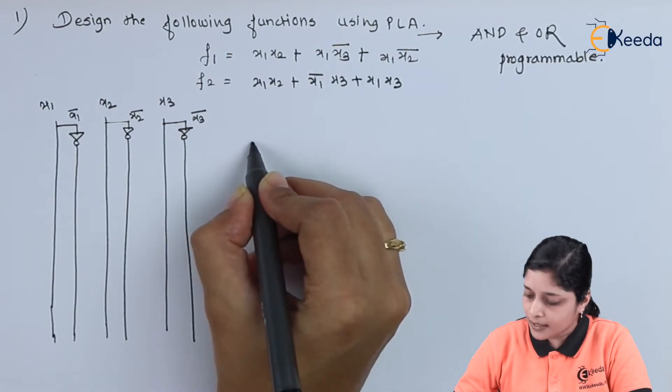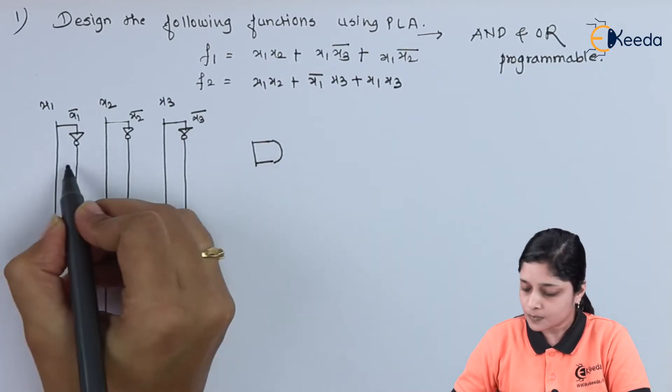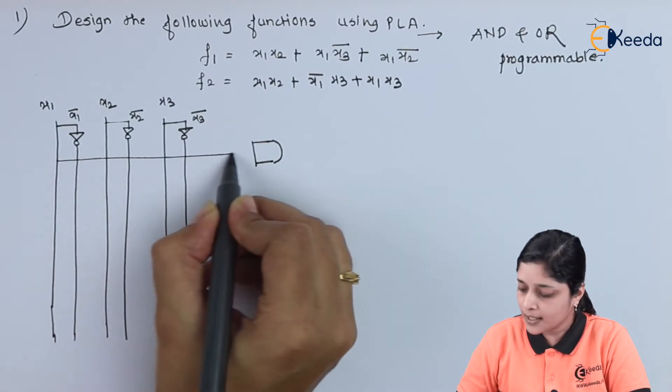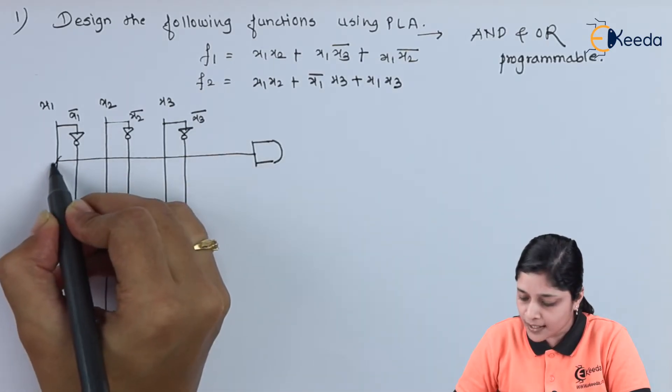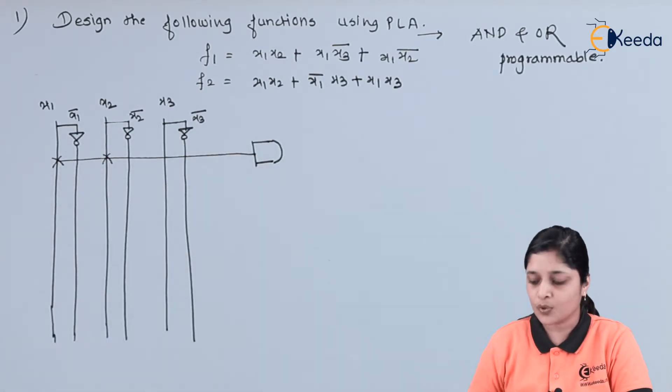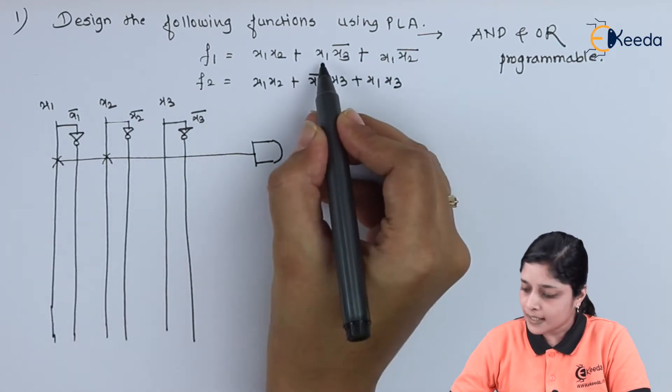We will draw AND gates here. The first term is x1 x2, so we will draw one line and we have to cross for x1 and x2. In this way you have to make the connections for each AND term.